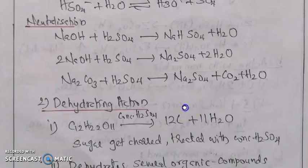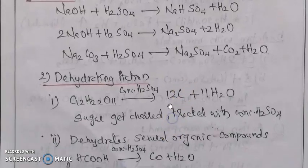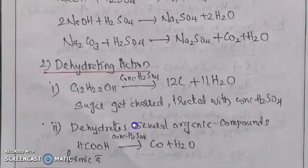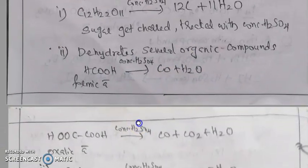Next, dehydration reaction — the dehydrating action of sulfuric acid. It can dehydrate and remove water. For example, sugar is dehydrated by sulfuric acid to give carbon. Concentrated sulfuric acid also dehydrates several organic compounds. Formic acid reacts with concentrated sulfuric acid to produce carbon monoxide and water.